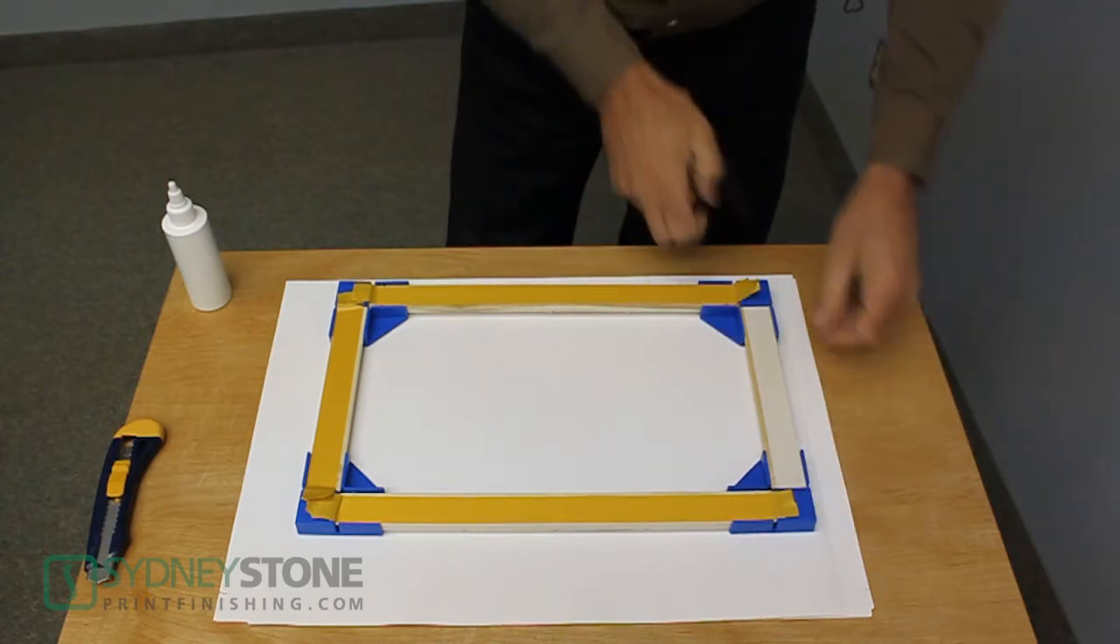Once the frame pieces are securely in the corner brackets, remove the release liner to expose the adhesive.